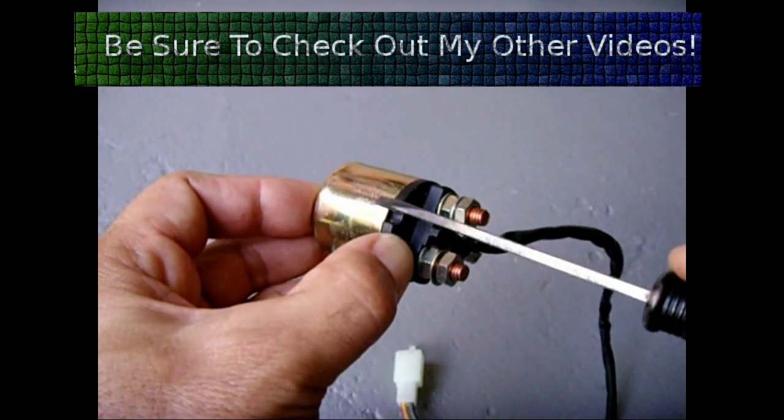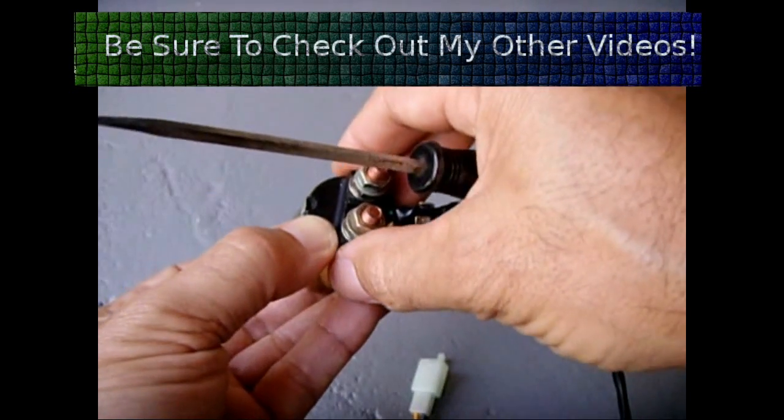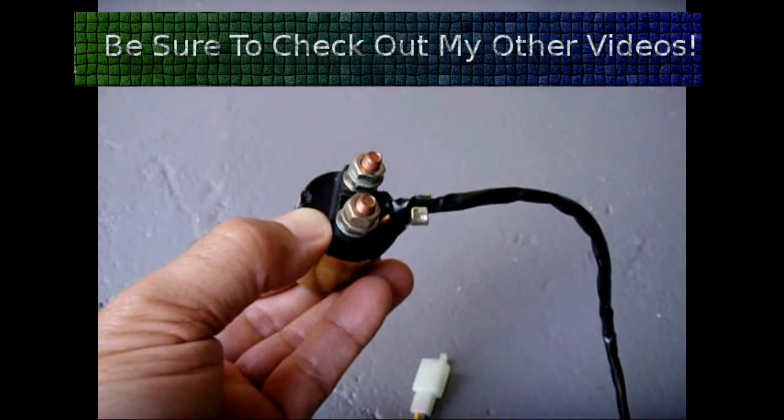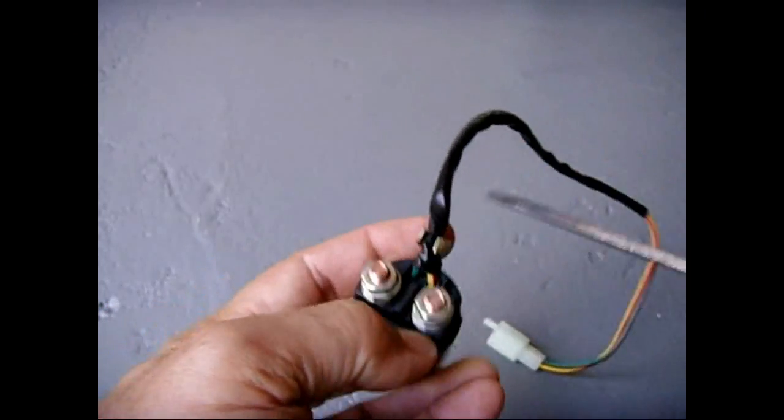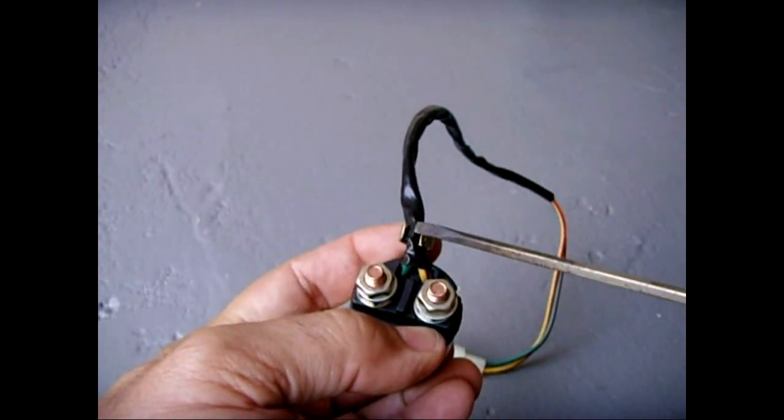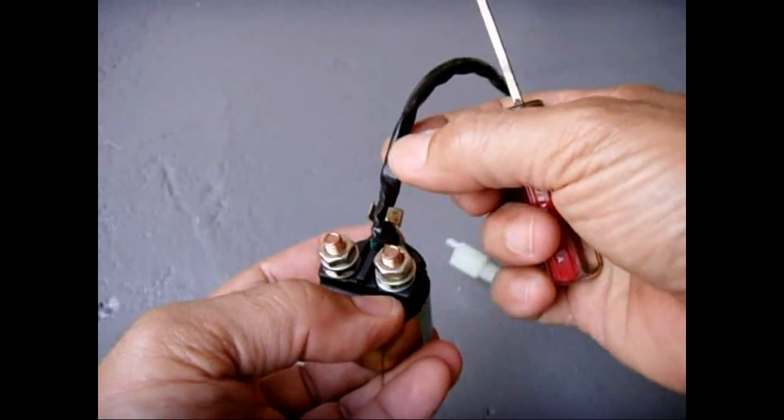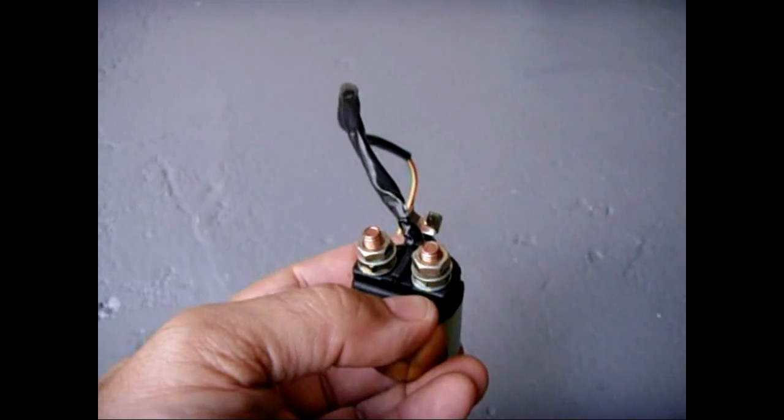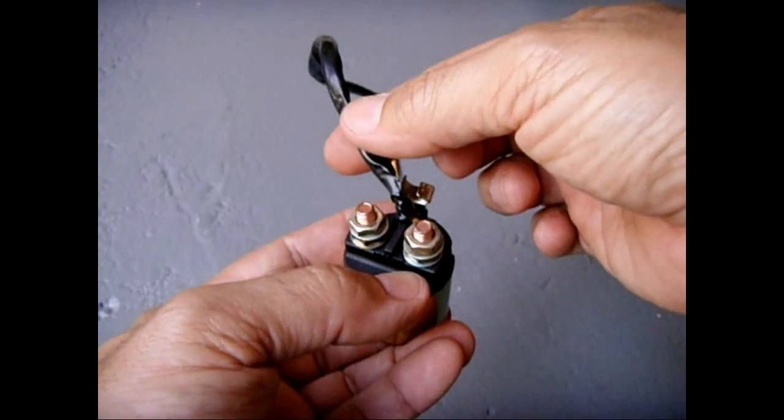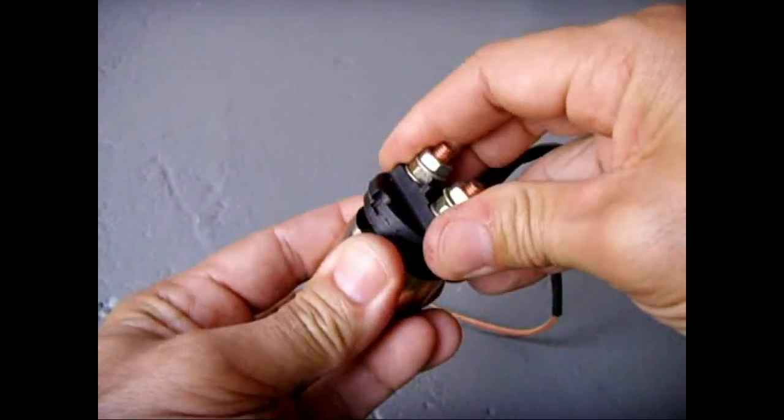Also, you're going to want to put the screwdriver here to spring open this clamp that's holding the wire, and then lift the wire out of the way. Once this is out of position and these are released, you can then wiggle and open it up like you see there.